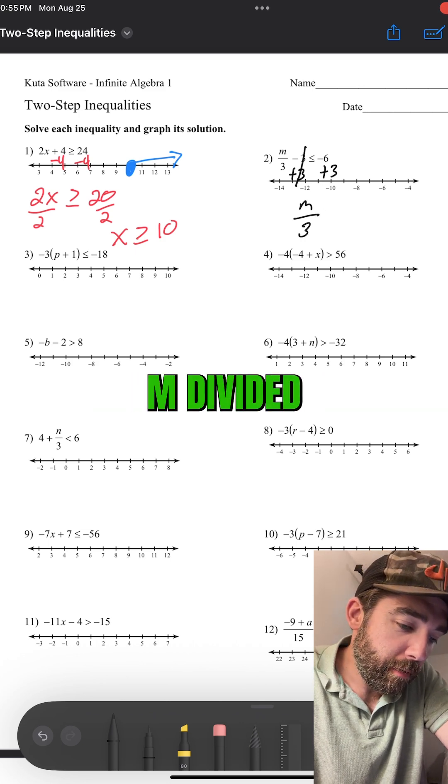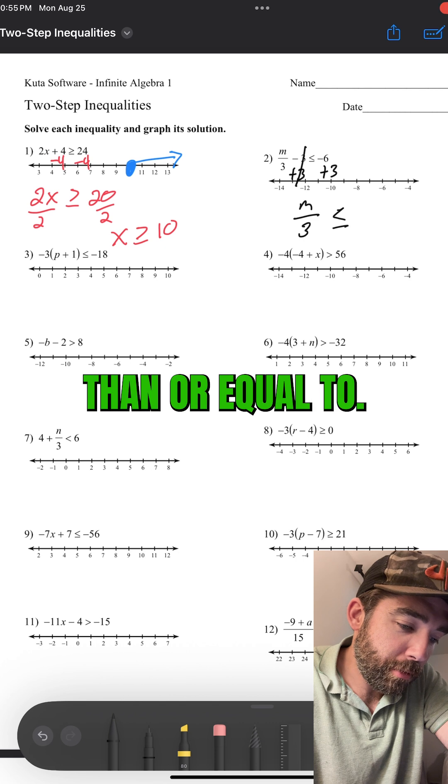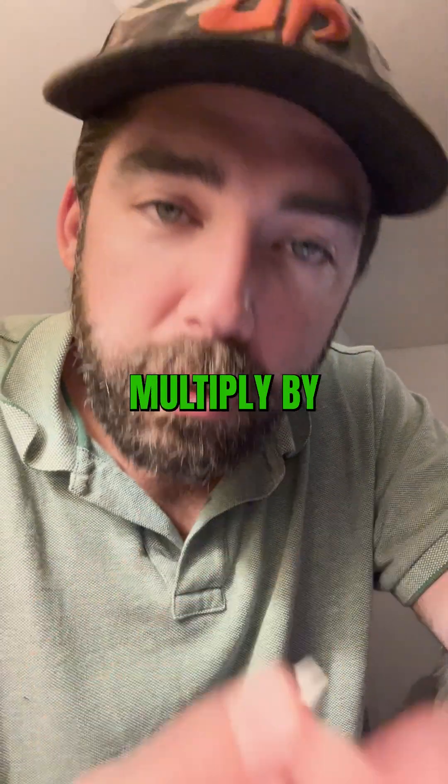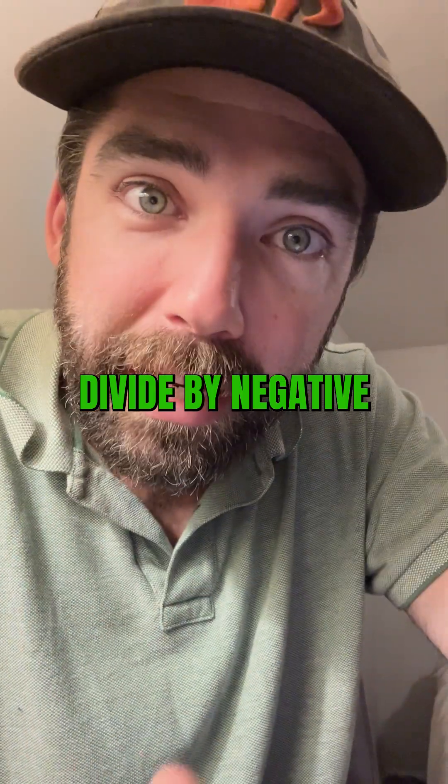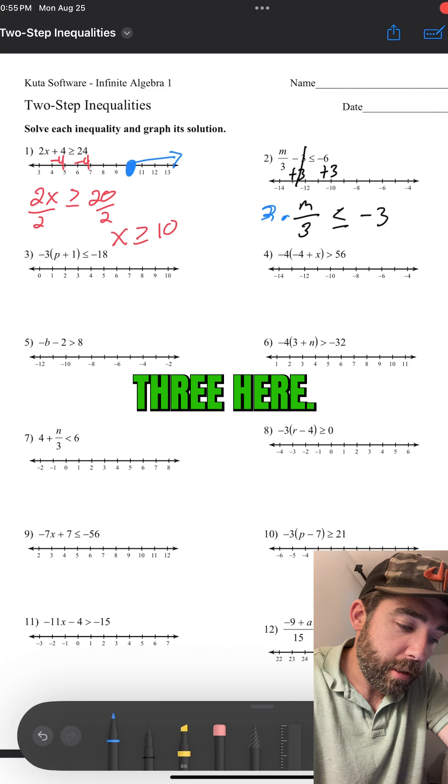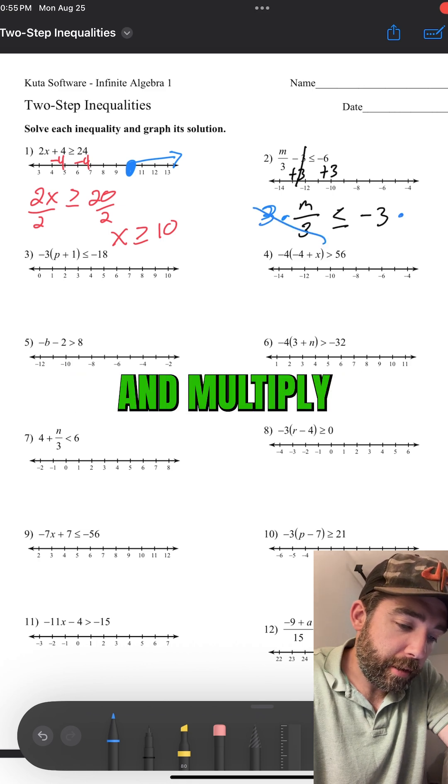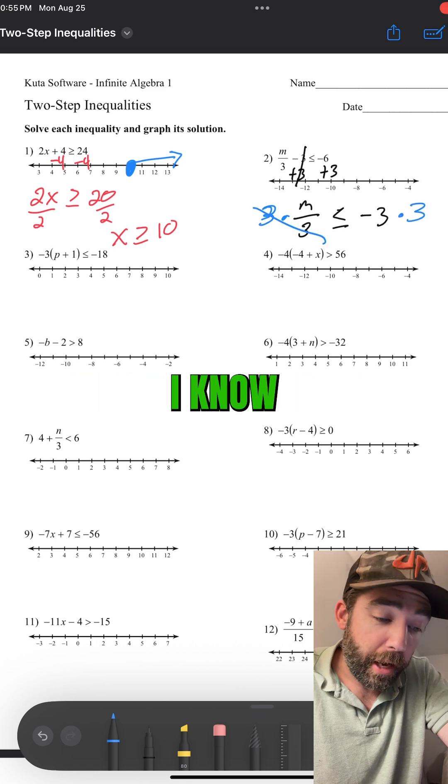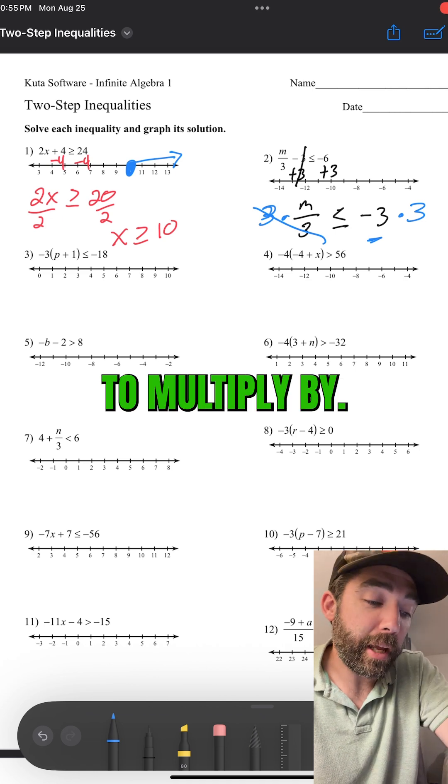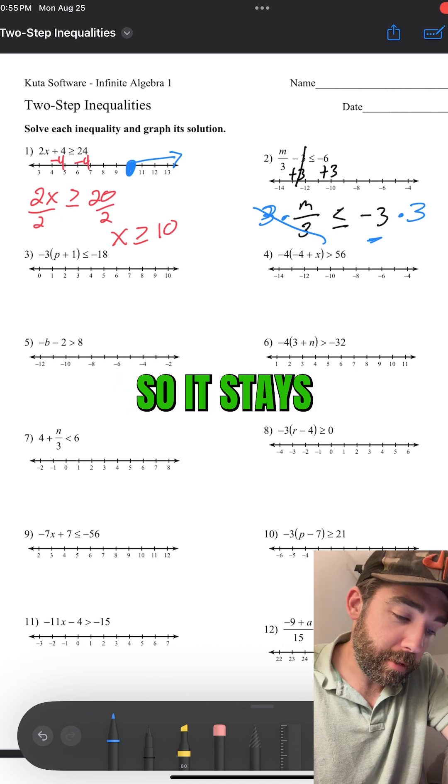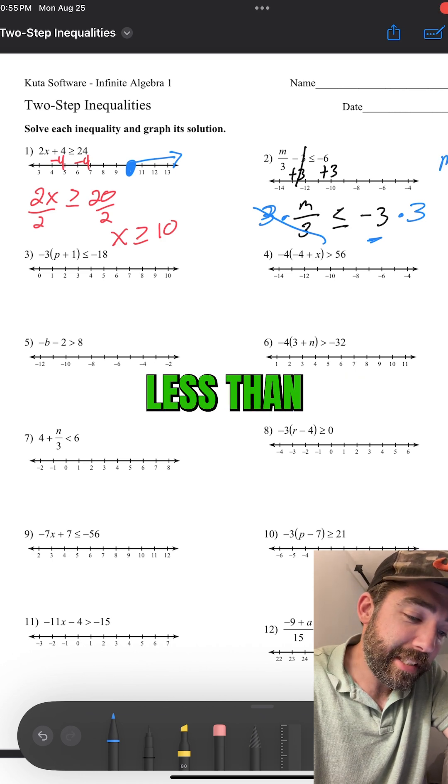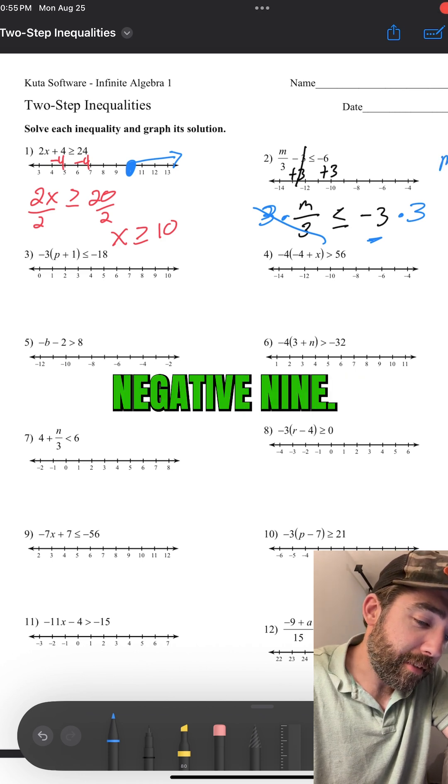There we go. m divided by three is less than or equal to. This is a negative three. Now, only when you multiply by a negative or when you divide by a negative does the sign flip. I'm multiplying by a positive three here to cancel that out. I'm multiplying by positive three. I know this guy's negative, but that doesn't matter. It's what I'm choosing to multiply by. So, I'm multiplying by a positive so it stays the same. So, my inequality is m is less than or equal to negative nine.